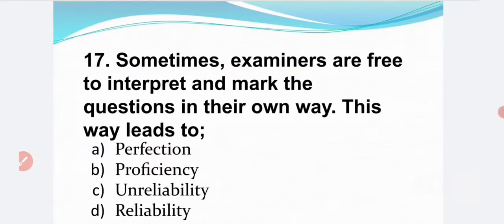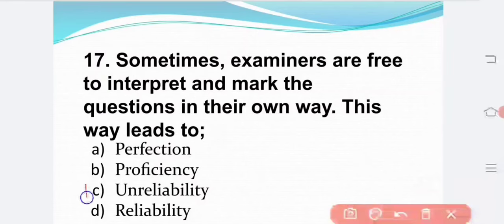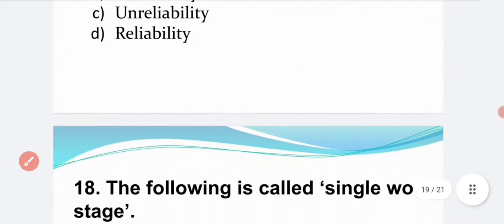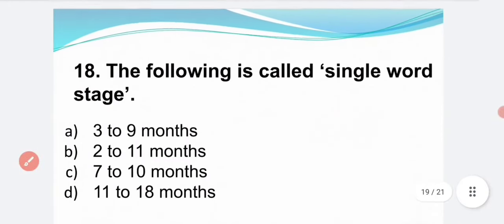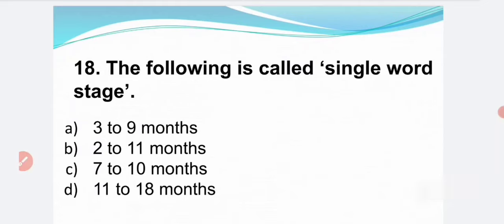Sometimes examiners are free to interpret and mark the questions in their own way. This leads to: Option A — perfection. Option B — proficiency. Option C — unreliability. Option D — reliability. The correct answer is Option C: unreliability.